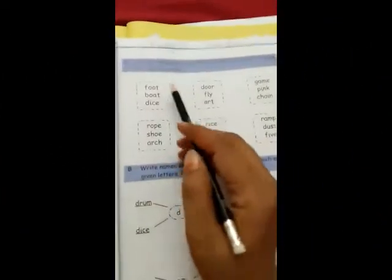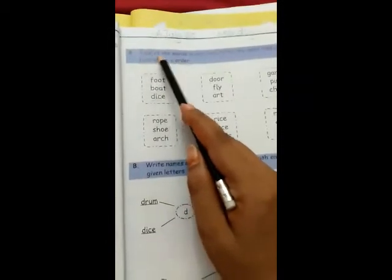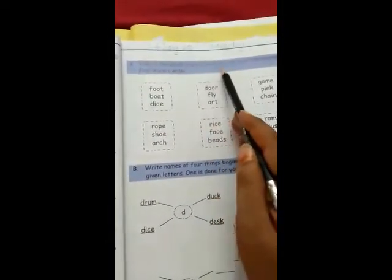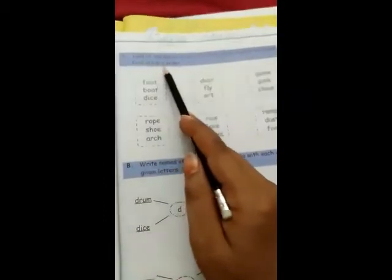Okay, now we will start our English work. Open page number 7. The topic is, look at the words in each box. Circle the words that comes first in ABC order.